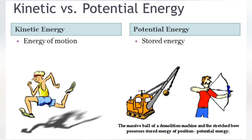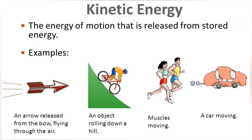Before we go to make a project, what is potential energy? Potential energy is the energy in a body due to its position, and kinetic energy is the energy that a body possesses due to its object's motion. For example, a stretched elastic string in a longbow.